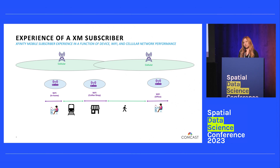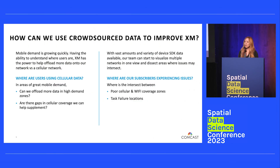However, we understand that users can still be experiencing task failures during this time. Although we don't have the ability to change or modify the cellular network — essentially because we are borrowing Verizon's network — we have the ability to use spatial analytics to optimize the Wi-Fi network layer. Mobile demand is growing quickly, and with the vast amounts of device SDK data out there, our team can start to visualize multiple networks in one view and dissect areas where issues may intersect.